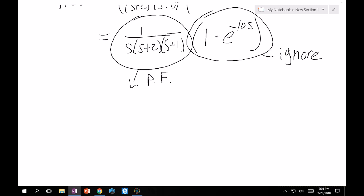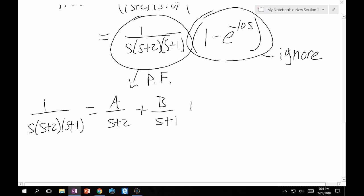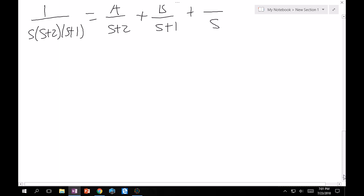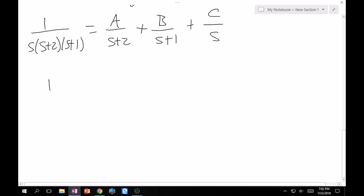If we take partial fractions of this, we can set this up as 1 over s(s+2)(s+1), and that's equal to A/(s+2) + B/(s+1) + C/s. Then if we multiply through by the denominator on the left-hand side, this will become 1 = A(s+1)(s) + B(s+2)(s) + C(s+2)(s+1).